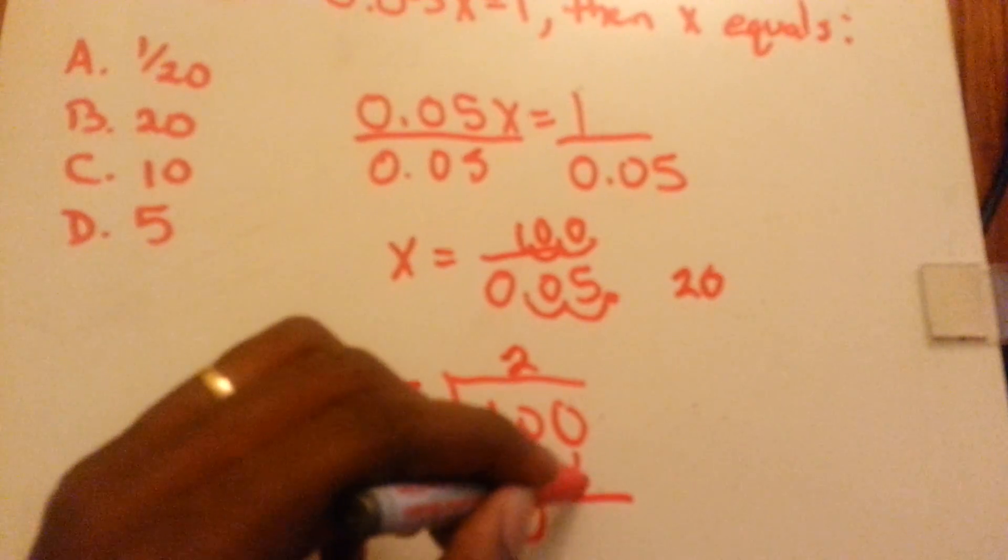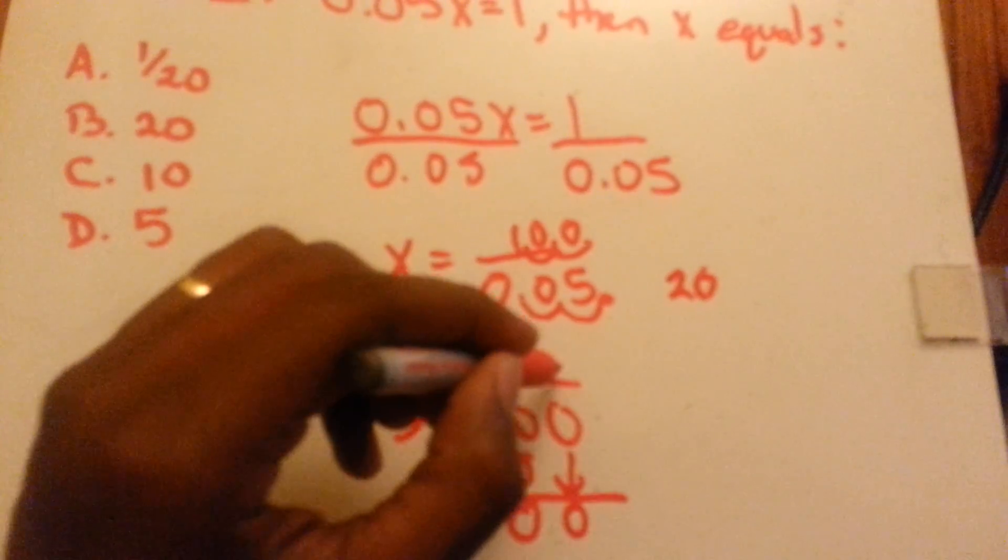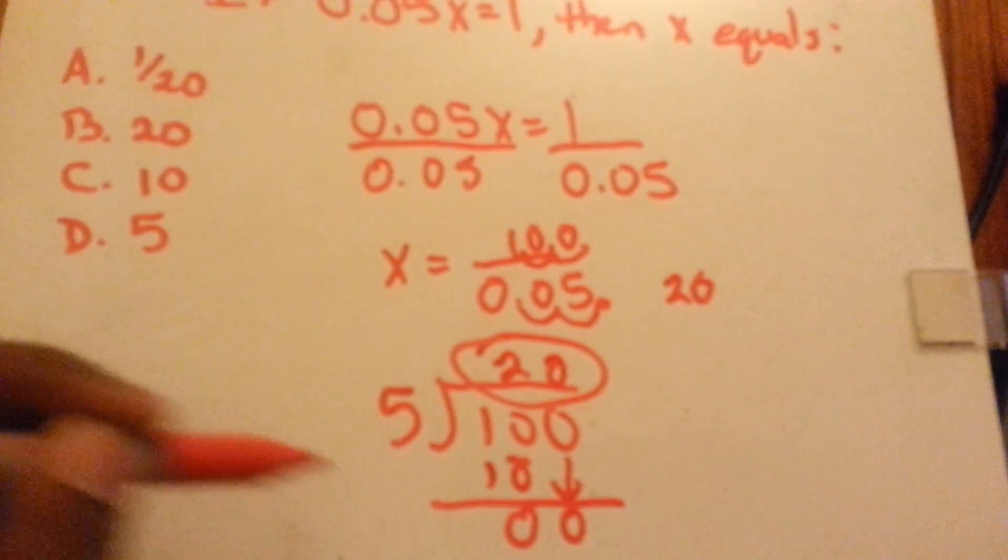no remainder, bring it down, 5 goes into 0, 0 times, answer 20.